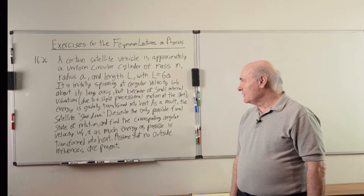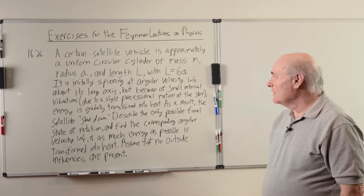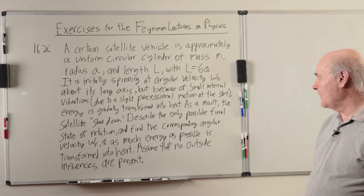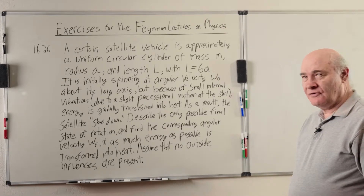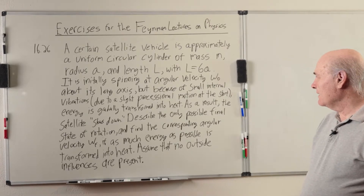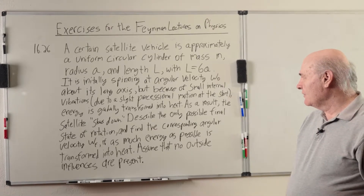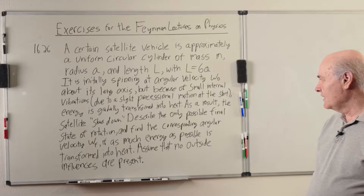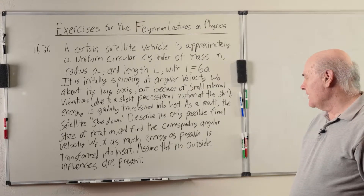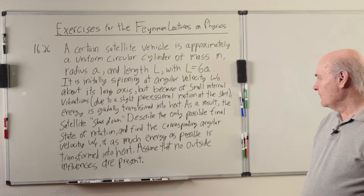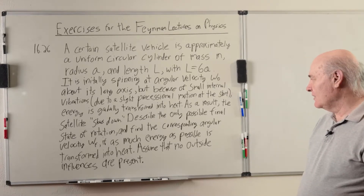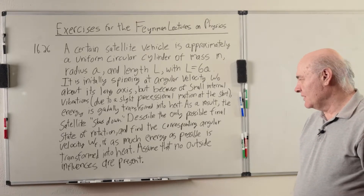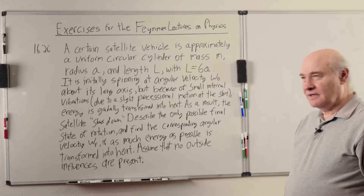This particular exercise — I'll read it, it's written on the board here — 1626: a certain satellite vehicle is approximately a uniform circular cylinder of mass m, radius a, and length l, with l equals 6a. It is initially spinning at angular velocity omega zero about its long axis, but because of small internal vibrations due to a slight precessional motion at the start, energy is gradually transformed into heat. As a result, the satellite slows down. Describe the only possible final state of rotation and find the corresponding angular velocity omega F, if as much energy as possible is transformed into heat. Assume that no outside influences are present.